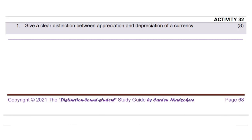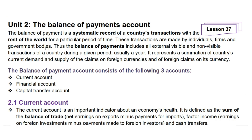Let's get into the lesson for the day. The lesson takes us to unit 2: the balance of payments account. The balance of payments is a systematic record of a country's transactions with the rest of the world for a particular period of time. These transactions are made by individuals, firms, and government bodies. The balance of payments includes all external visible and non-visible transactions of a country during a given period, usually a year.